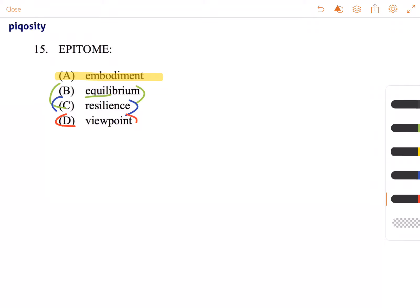And then viewpoint, meaning way of considering or one's position on a matter. A viewpoint could be the embodiment of something else, but it is not an embodiment or does not mean embodiment or the epitome of something. So a viewpoint might be the epitome, but it is not what epitome means. So none of these things work as answer choices.